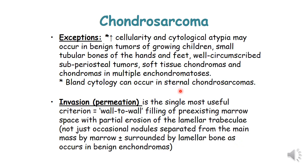Conversely, bland cytology can occur in the sternum and should still be diagnosed as chondrosarcoma. The surest sign of malignancy in chondrosarcoma is invasion. In your specimen, search for infiltrative growth: wall-to-wall filling of pre-existing marrow spaces and partial erosion of host lamellar bone trabeculae. This infiltrative pattern is the single most useful criterion. Chondrosarcoma may also extend through the Haversian canals of the cortex.